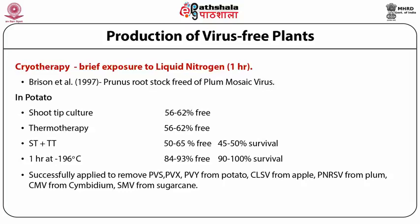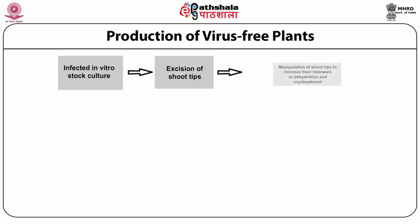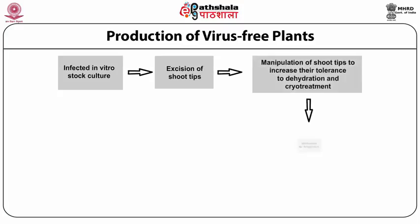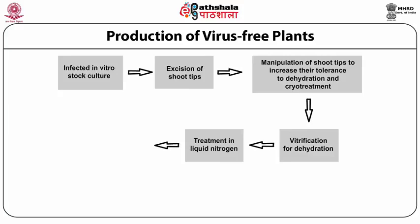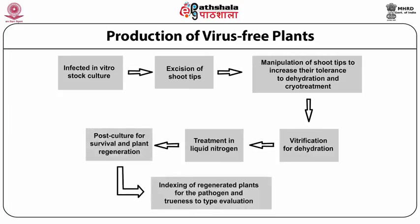Cryotherapy has been successfully applied to potato virus S, potato virus X, potato virus Y, and a number of other viruses from fruit trees. The advantage is that you can use a larger explant. The cryotherapy flow chart shows the process: you start with infected in vitro stock cultures, excise the shoot tip, increase tolerance by dehydration using a cryoprotectant, then subject it to vitrification by dehydration and treat with liquid nitrogen. Post culture for survival and plant regeneration, then index the plants.